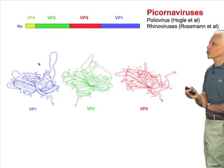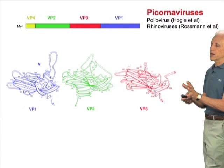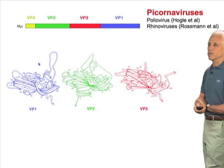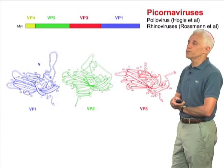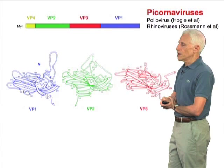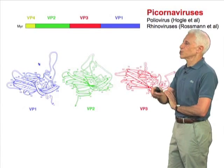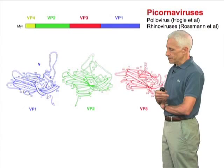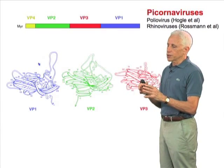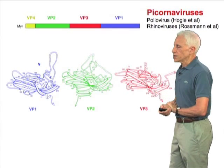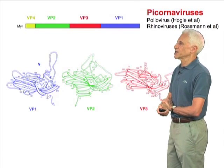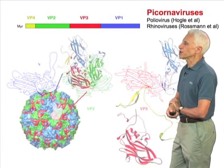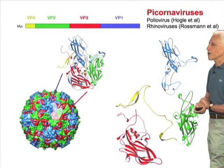Those three subunits look strikingly like that same beta jelly roll we saw in the parvovirus subunit, but the loops are a little less extensive, because in this case, with three subunits, the size of the particle doesn't need to be additionally augmented by taking up space with those loops, and one can still package adequate amounts of RNA.